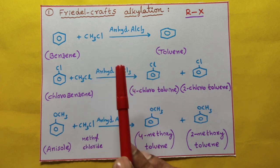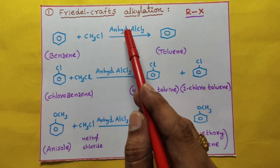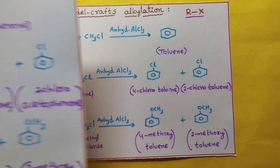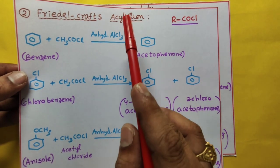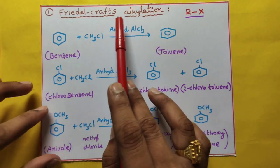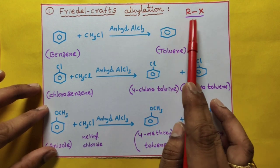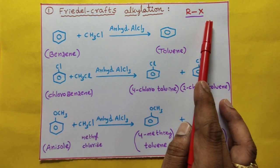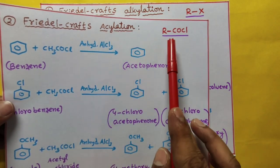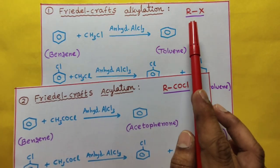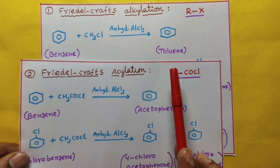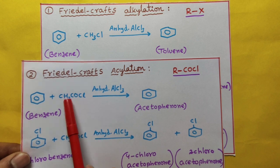First, see the similarities. In Friedel-Crafts alkylation we are using the catalyst anhydrous AlCl3, which is a Lewis acid. Even in acylation, the same anhydrous AlCl3 is used. In Friedel-Crafts alkylation, we take alkyl halide. In acylation, we take acyl halide. A simple example: for alkyl halide I have taken methyl chloride, and for acylation I have taken acetyl chloride.